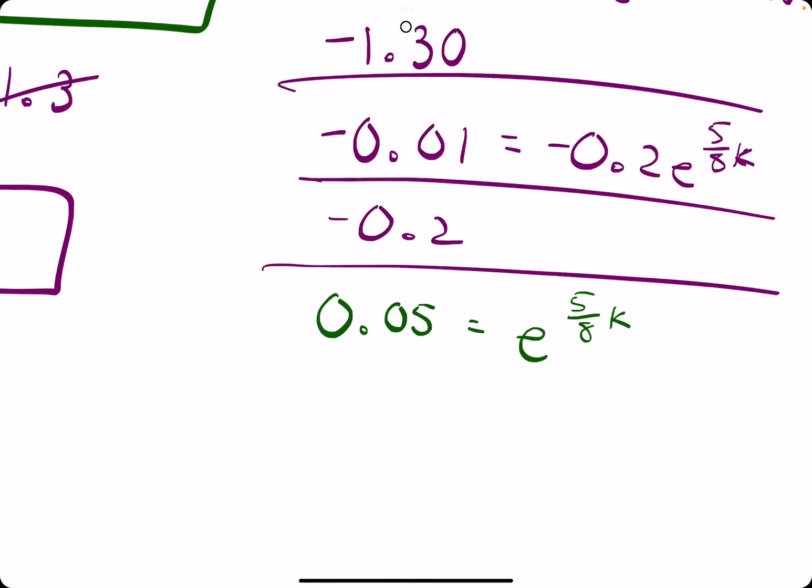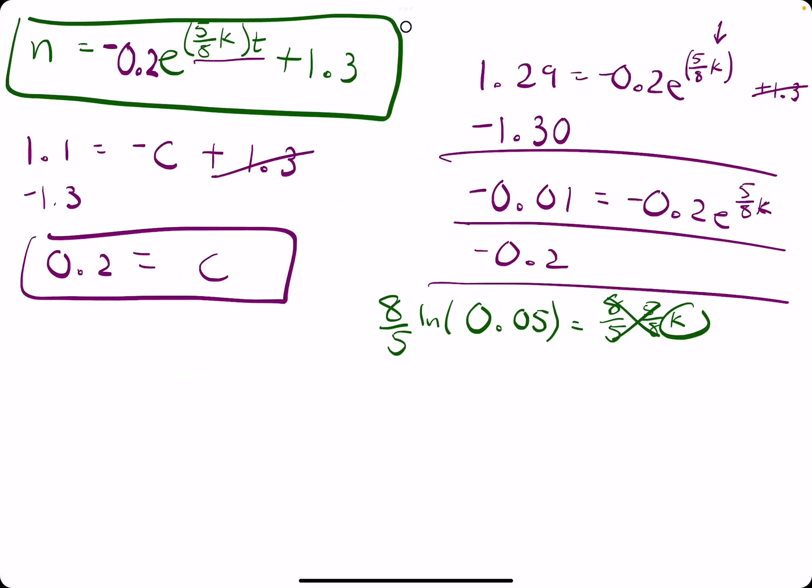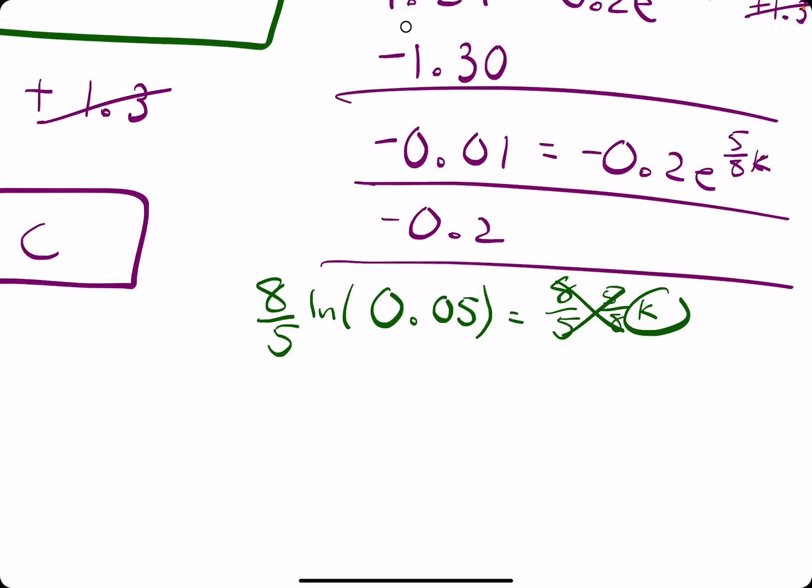So, now we want to take the natural log of both sides, eliminating the e, leaving us with just 5 eighths times k. So, we divide by 5 eighths or multiply by 8 fifths on both sides to cancel it and leave us with just k. So, 8 fifths ln of 0.05 should be our answer.